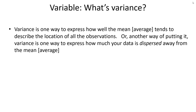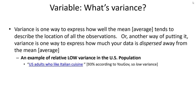Variance is one way to express how well the average value tends to describe the location of all the observations in our data set. Put another way, variance tells us how much our data is dispersed — spread around or spread closely to the mean or average. For example, in the US, the percentage of adults who like Italian cuisine is estimated to be about 93%. This is a very low variance situation since most people are bunched around agreeing that it's a cuisine they like.